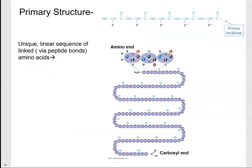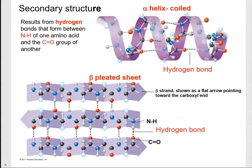The primary structure — the first level of organization — is just a chain of amino acids linked by peptide bonds. Like a necklace with little beads on a string, that's basically the primary structure. One end is the amino end and the other is the carboxyl end, linked by peptide bonds into a chain. It doesn't have a shape yet and isn't functioning yet, but it is the first level produced when ribosomes assemble a protein.